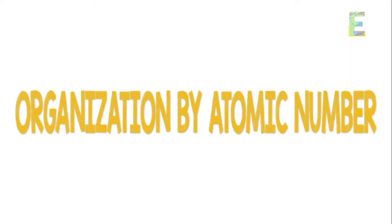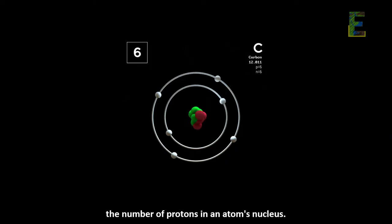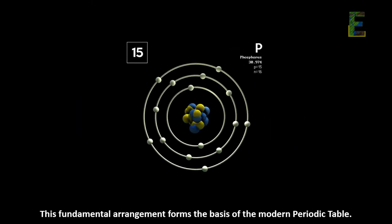Organization by atomic number. Today, elements are organized by increasing atomic number, the number of protons in an atom's nucleus. This fundamental arrangement forms the basis of the modern periodic table.